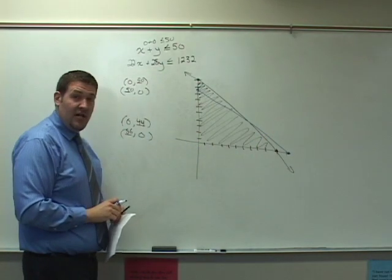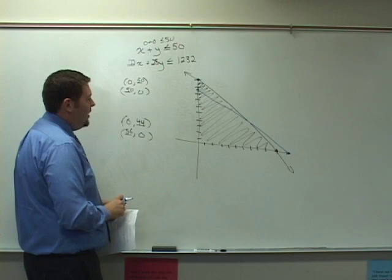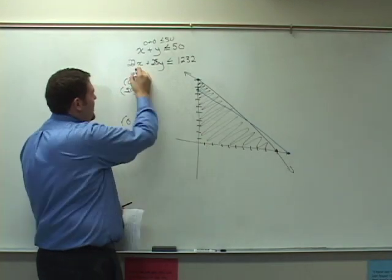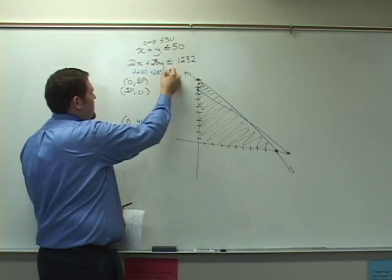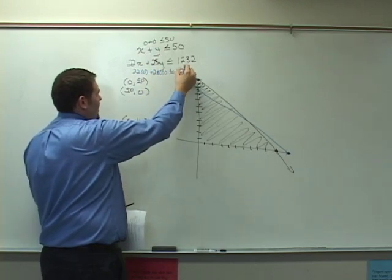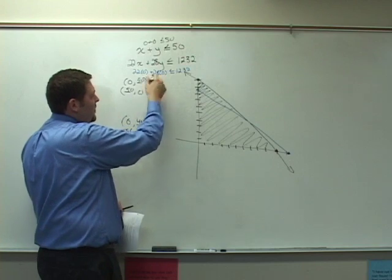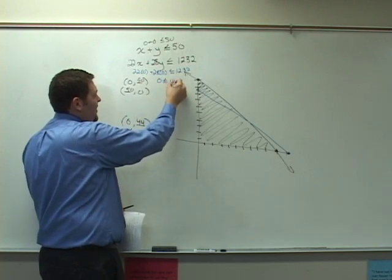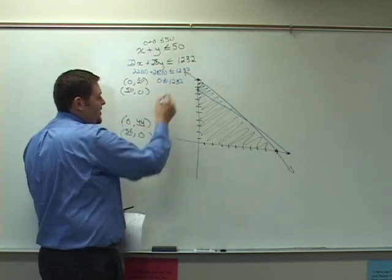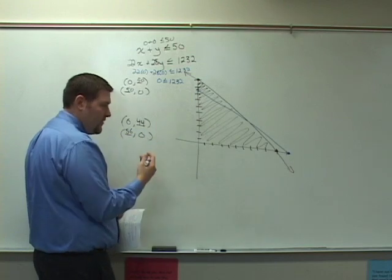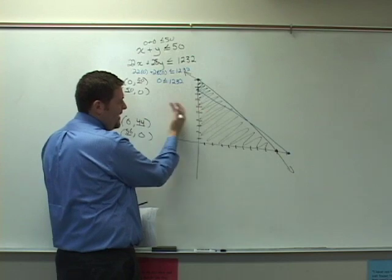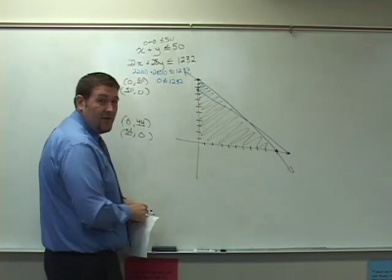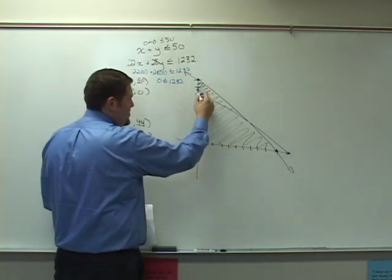And now I'm concerned about whether I shade above the line or below the line. So again, I look towards this 0, 0 to help us. And I have 22 times 0 plus 28 times 0, and see if that, in fact, is less than $1,232. Well, it will come out that 0 is, in fact, less than $1,232. So I should include the region that includes 0, 0 or down. Again, I'm concerned about not shading to the parts left and right of the axes. Those would give us values that are negative. So I'm going to shade below.